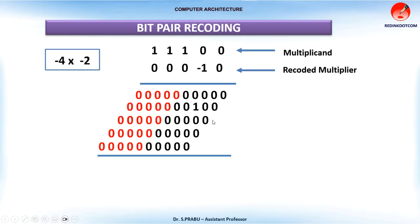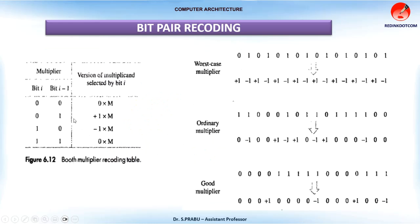Now add the partial products. After adding, you get the result. Taking the first 10 digits and checking the leftmost bit — it is 0, so the result is a positive number. Minus 4 times minus 2 gives plus 8. This single bit recoding method works best when successive numbers are the same, reducing the number of ones and thus reducing the number of partial product additions. However, in the worst case, if the multiplier has alternating zeros and ones, you get a recoded value that requires extra calculation. So this fast multiplication method is not applicable for all situations.